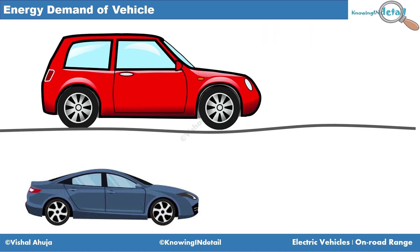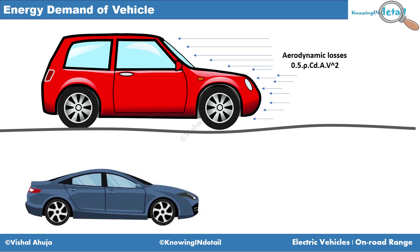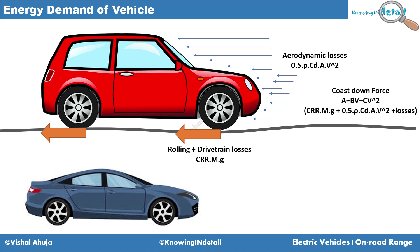For understanding the efficient route it's very important to understand where the energy is going. For a vehicle running on road there are two major forces acting on the vehicle. One is the aerodynamic force, and the second one is rolling resistance and driving resistance and driving losses, apart from the inertial force and the gradient force. These two major forces combined are called total vehicle resistance force, defined as the cozone force.